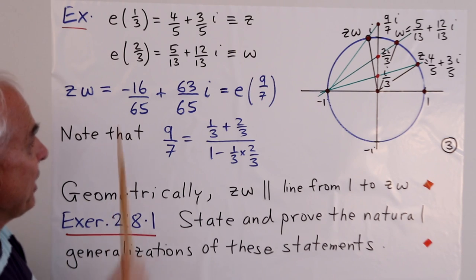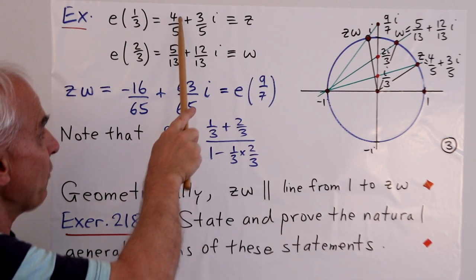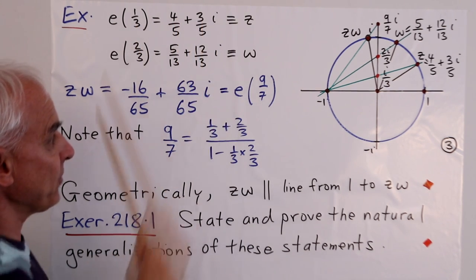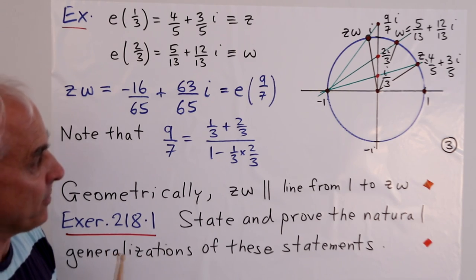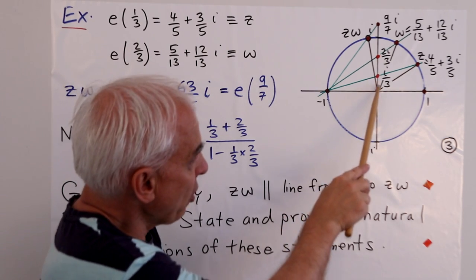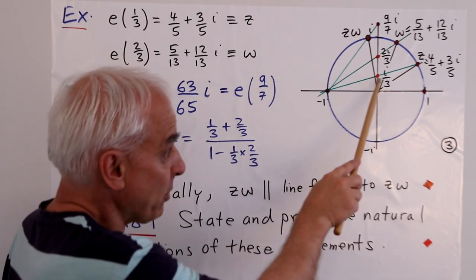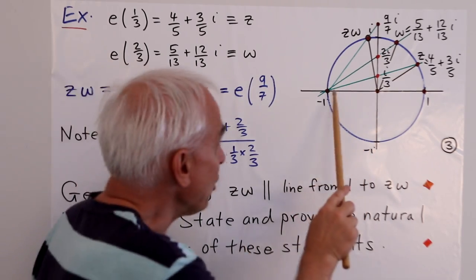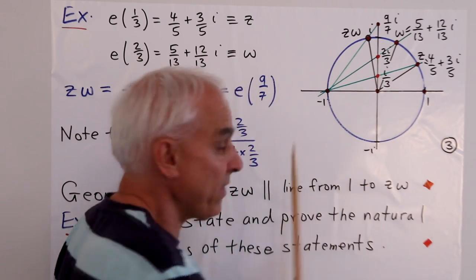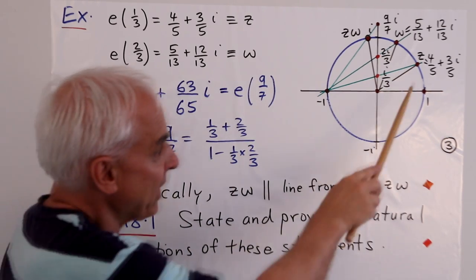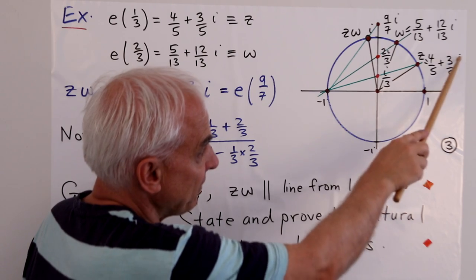Let's say e(1/3). You can calculate that e(1/3) is 4/5 + 3/5i, which is z. Geometrically, if we go up to the point with coefficient 1/3, in other words i/3, and join these two points, then where that line meets the unit circle is the point 4/5 + 3/5i.